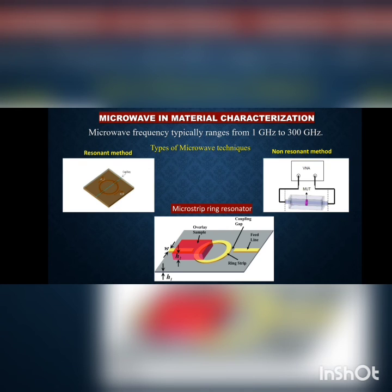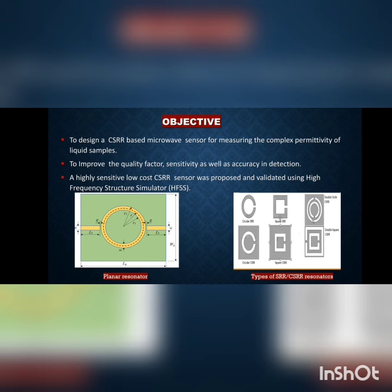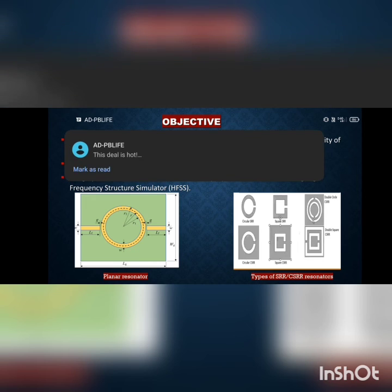Now we will learn about the microstrip ring resonator. It has been established that a ring which is an integral multiple of the wavelength long can be used as a resonant device. When microwaves are fed into the ring, it shows resonant characteristics, and by these resonant characteristics we can characterize materials based on their dielectric properties.